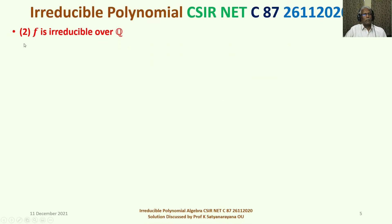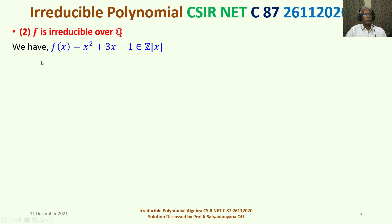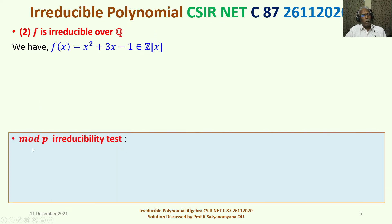We now consider the statement given under Option 2: f is irreducible over Q. We have the given polynomial x² + 3x − 1 belonging to Z[x], that is, it is a polynomial ring with coefficients coming from the ring of integers. We recall the mod p irreducibility test.